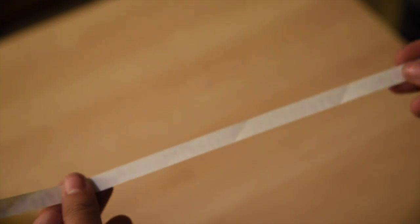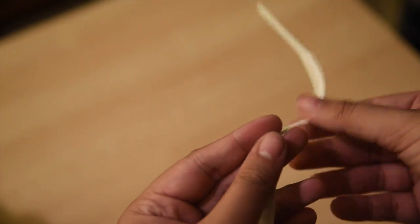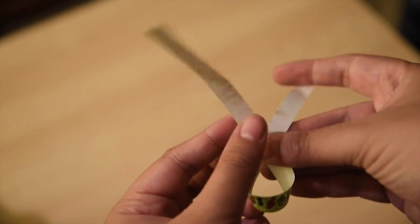So as you can see here I have my strip of paper. What you want to do first is cross the left end of your paper over to the right to make a ribbon.